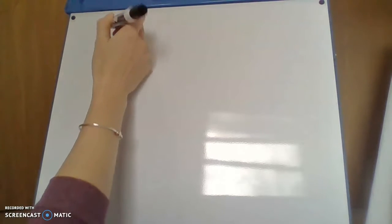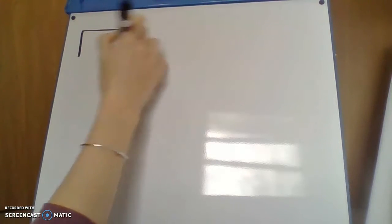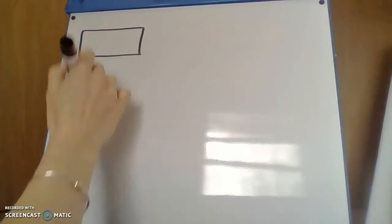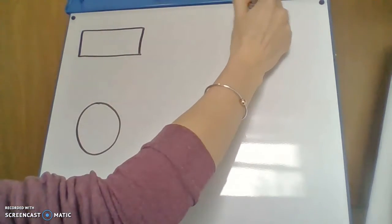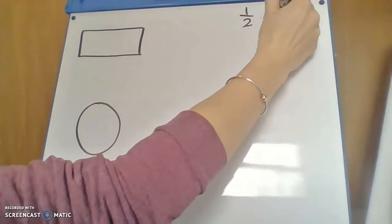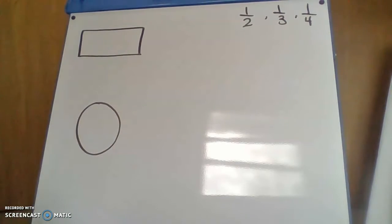So first one, let's do a rectangle. And I'll draw my circle. We'll do that next. So we'll start off with halves, but we're going to do thirds and we're going to do fourths as well. So to split up a rectangle in half, you just have to make sure that your two parts are equal.